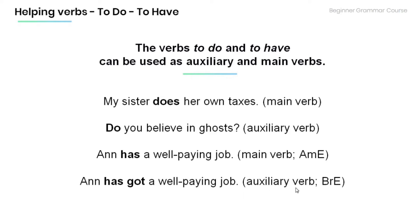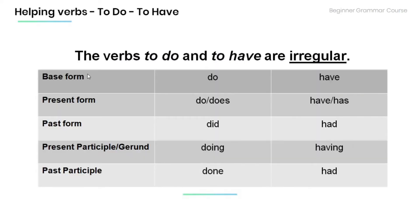Remember that the verbs 'to do' and 'to have' are irregular. The base form is 'do' / 'have.' Present forms: 'do' or 'does' / 'have' or 'has.' Past forms: 'did' / 'had.' Present participle or gerund: 'doing' / 'having.' Past participle: 'done' / 'had.'